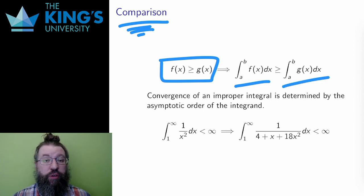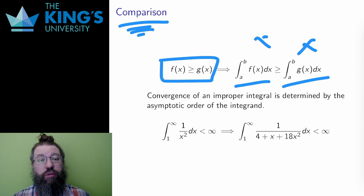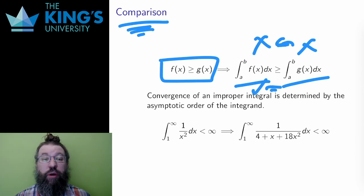Therefore, if g diverges, the larger f must also diverge, and if f converges, then the smaller g must also converge.